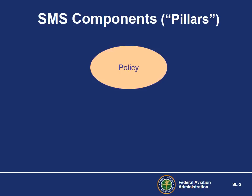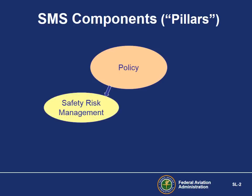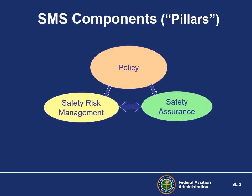The safety risk management, SRM, and safety assurance components are the primary functional processes of the SMS. These two components combine system safety and quality management into an interactive process. SRM is where hazards are identified, analyzed for risk, assessed, and controlled. Safety assurance is where the controls are monitored to ensure they continue to work to mitigate safety risk.